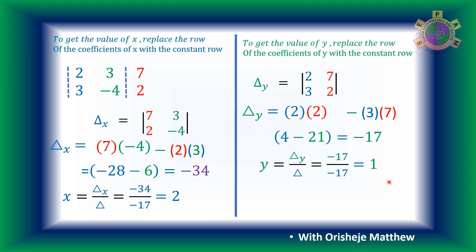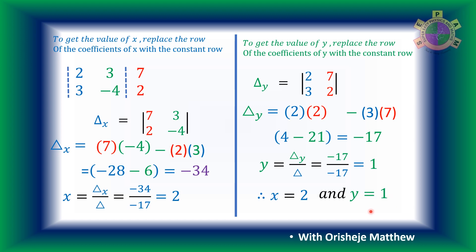So y is equal to 1. With this, we have gotten the value of x and the value of y. We have finished solving the simultaneous equation. x is equal to 2 and y equals 1 are the solutions of the simultaneous equation.